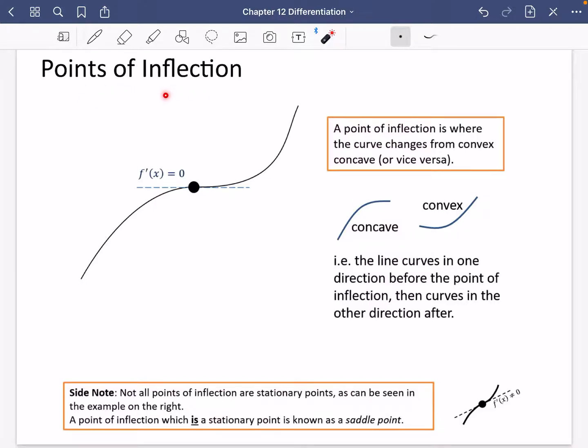So the third type of stationary point - we've got maximum, we've got minimum - we can also have something called a point of inflection. I came across points of inflection when we were doing graph sketching in chapter four, so I just wanted to remind you of what a point of inflection is. A point of inflection is where the curve changes from convex to concave or vice versa.